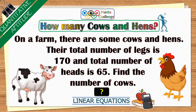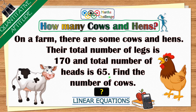Hello everyone! Today's mouse challenge is based on the question that you can see on your screen. On a farm there are some cows and hens. Their total number of legs is 170 and the total number of heads is 65. Find the number of cows.